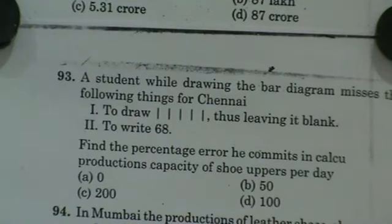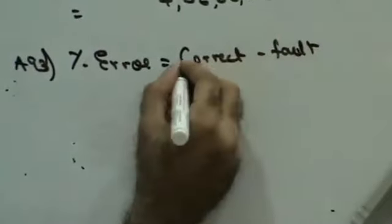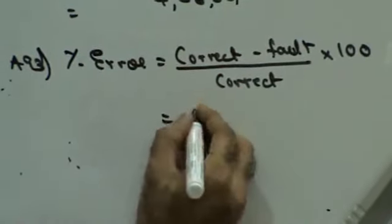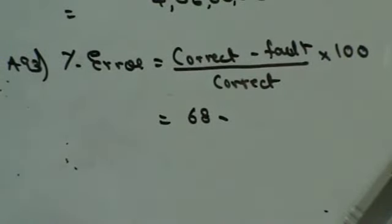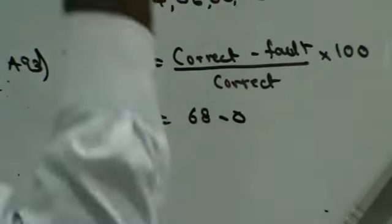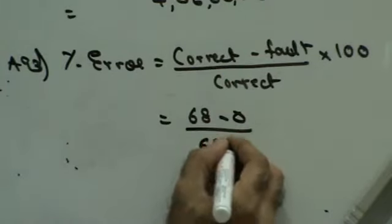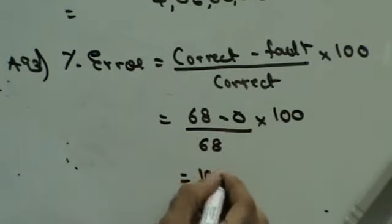Thus, he leaves it blank. And to write 68. Find the percentage error he commits in calculating production capacity of shoes upper. So it is only in shoes upper that he has forgotten to write 68. He has not made an error as such. Percentage error is given by the formula of correct value minus wrong value upon correct value into 100. The correct value of shoes upper is 68. He has drawn it correctly except that he has only forgotten to write 68. So the answer is zero divided by 68 into 100, which is zero.